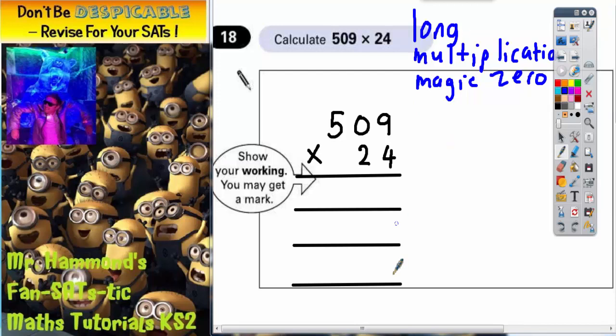Now that we've got those three lines in, we need to multiply 509 by this 4 here, and that will go on the top line. So we're going to do 4 lots of 9, 4 lots of 0, and 4 lots of 5 in that order. So let's start with 4 lots of 9. 4 nines are 36, put your 6 in, carry the 3.